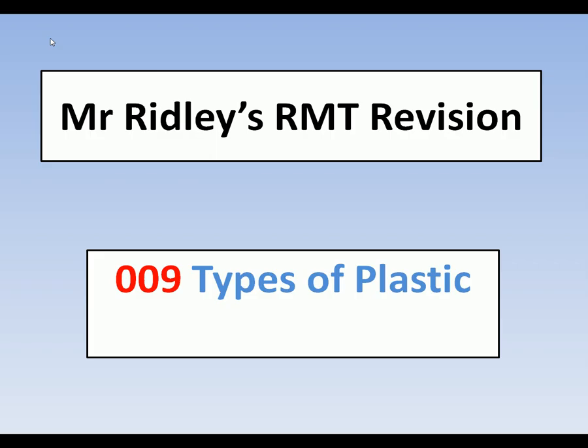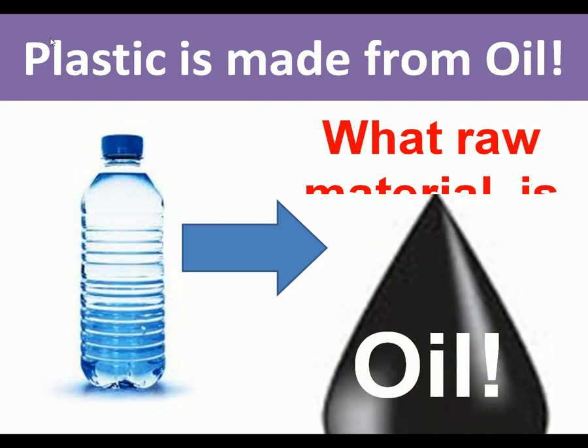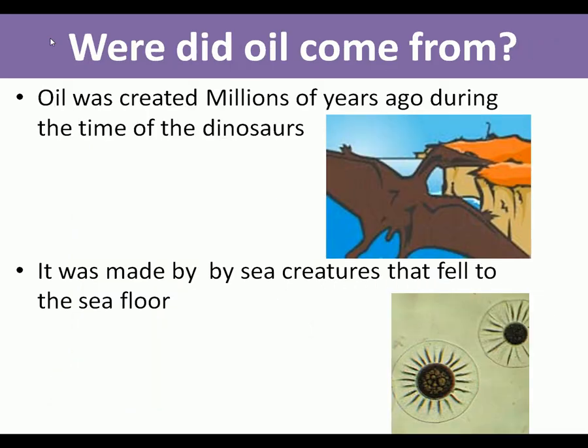The first thing we need to know about plastic is that plastic is made from oil — that's the raw material that plastic comes from, or the majority of plastics come from. It's important to understand where oil came from; this is fundamental with plastics.